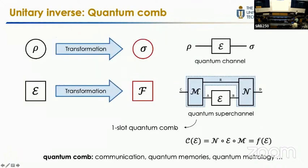The second concept to introduce is quantum comb. In quantum computing, we can not only do transformations on quantum states — transforming one state to another state sigma — but we can also do transformations on quantum operations, transforming an operation E to an operation F. In general, this can be done by a quantum network called quantum comb. In this figure, it is a one-slot quantum comb, which means it uses this operation for one time. After you input the operation you want to transform, the whole process becomes an operation from Hilbert space C to Hilbert space C, related to the target operation.